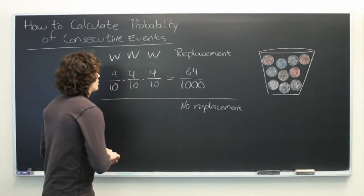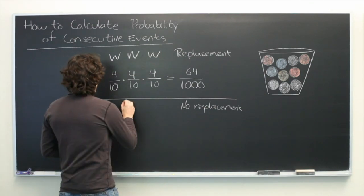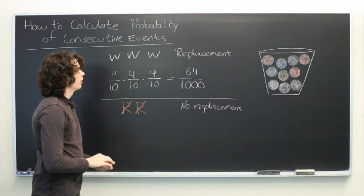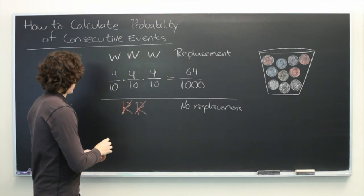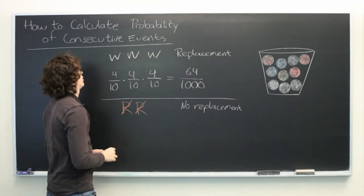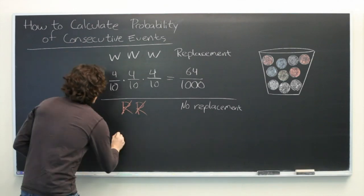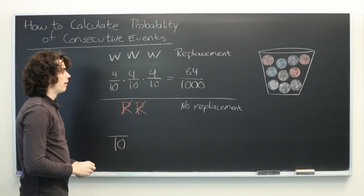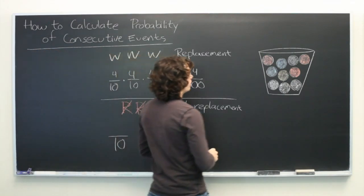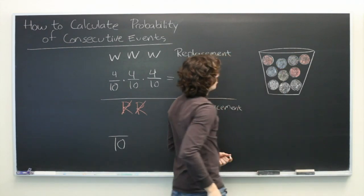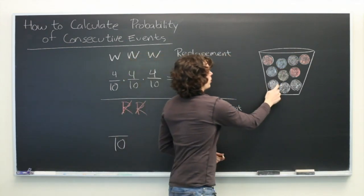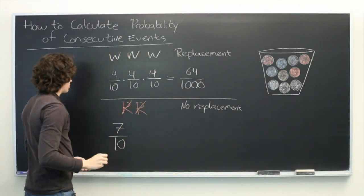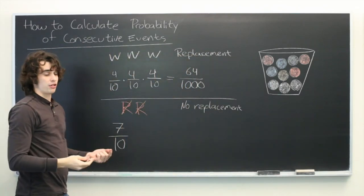Let's say that what we're looking for is two balls in a row that are not red. Let's calculate the probability of the first event. Again, there are ten different balls in the bucket, so that's the denominator of our fraction. The first time we draw, there are ten minus three balls that we can get: one, two, three, four, five, six, seven. Seven balls out of ten satisfy the criteria of not being red.